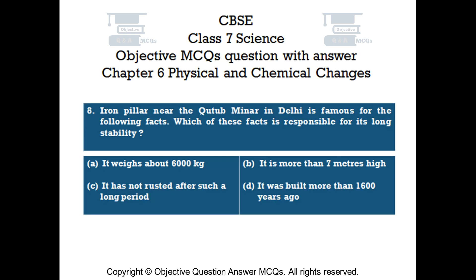Question number 8. The iron pillar near the Qutub Minar in Delhi is famous for the following facts. Which of these facts is responsible for its long stability? Option A: It weighs about 6,000 kilograms. Option B: It is more than 7 meters high. Option C: It has not rusted after such a long period. Option D: It was built more than 1,600 years ago.